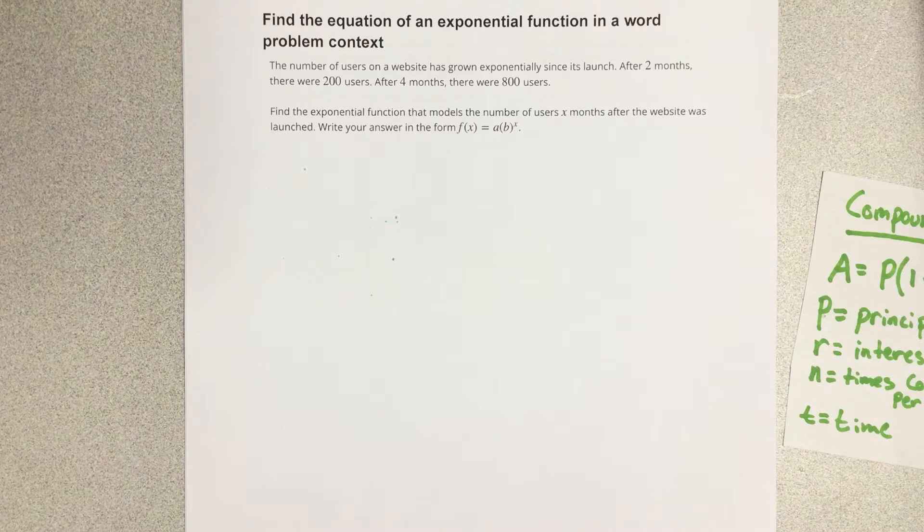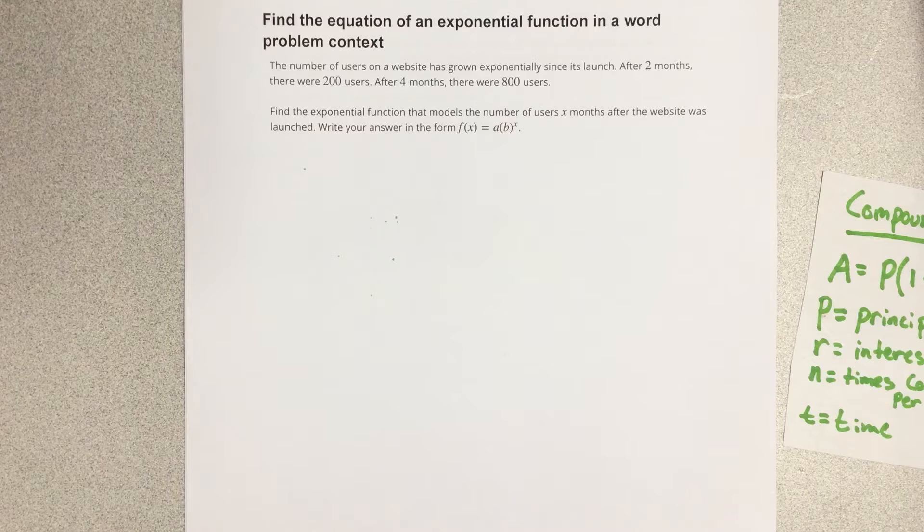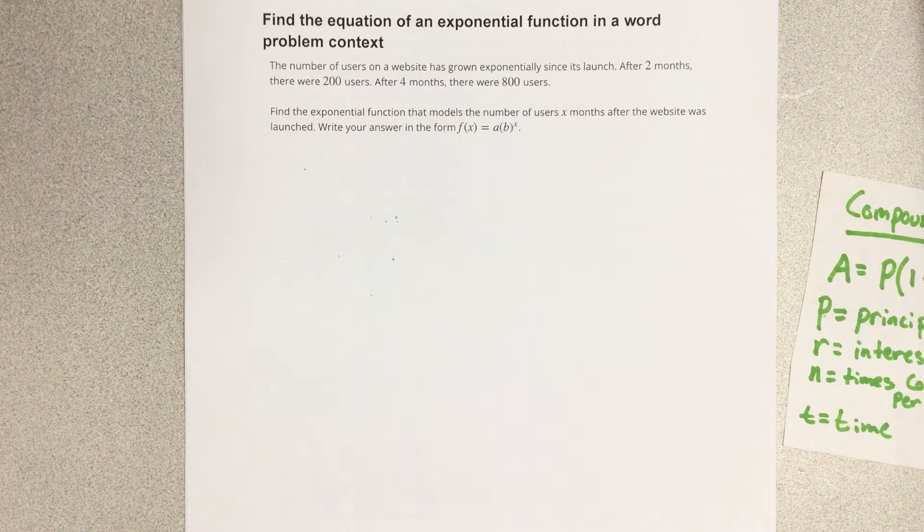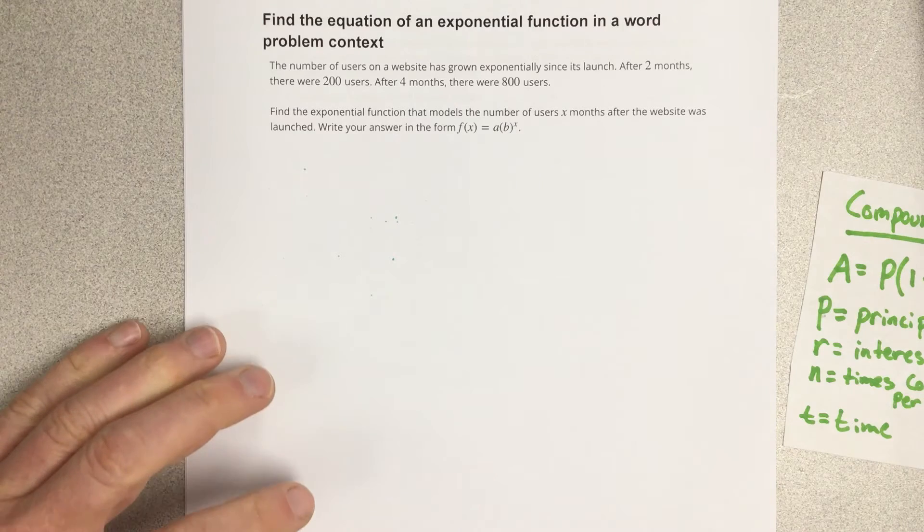In this video we're going to find the equation of an exponential function in a word problem context. It says the number of users on a website has grown exponentially since its launch. After two months there were 200 users, after four months there were 800 users.